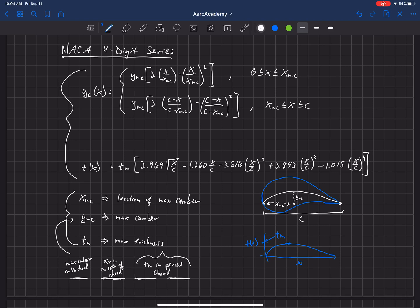So let's look at an example here. So the NACA 2412 is a very common airfoil. So we'll say NACA 2412. So what does that mean?